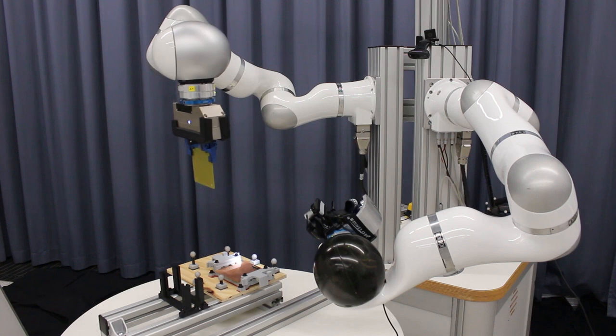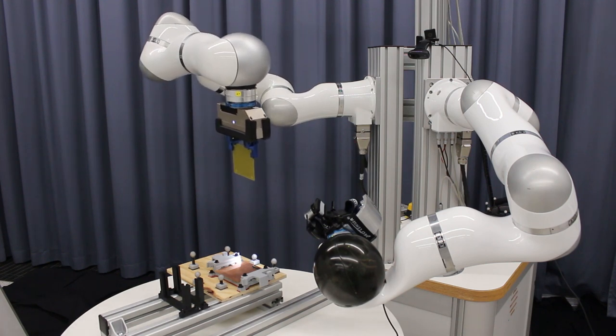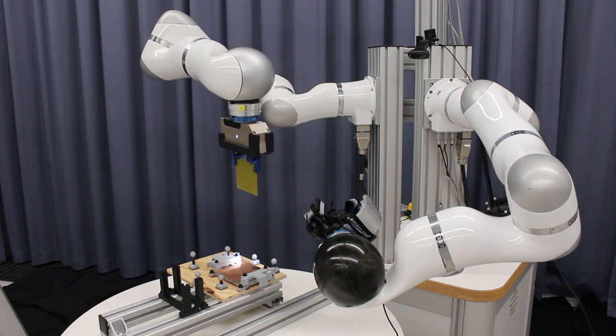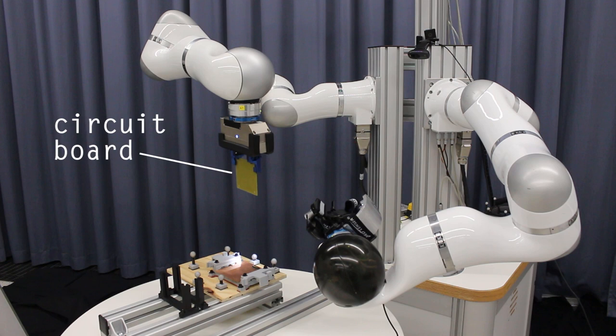We show how delicate tasks can be performed in robotic operations. The task is to plug a circuit board into the motherboard of a small satellite or CubeSat.